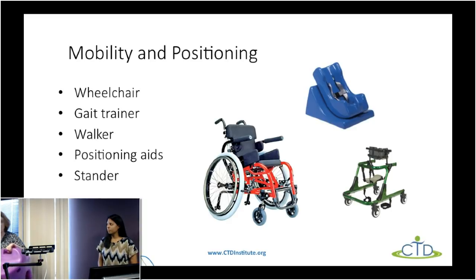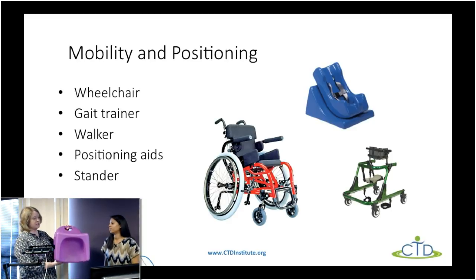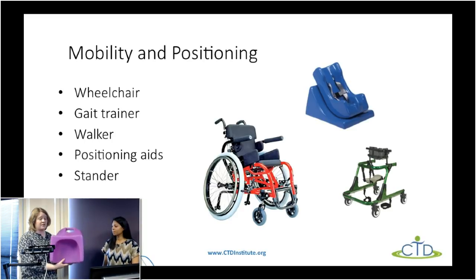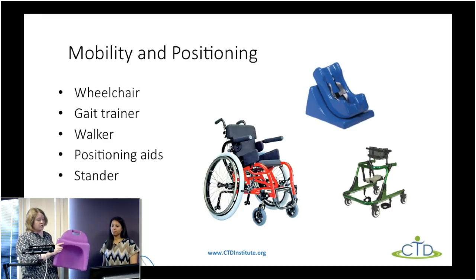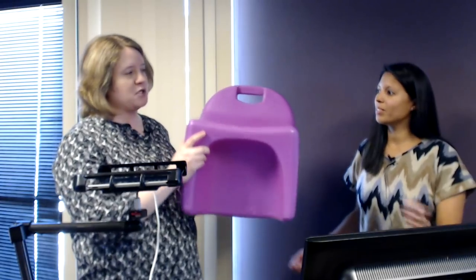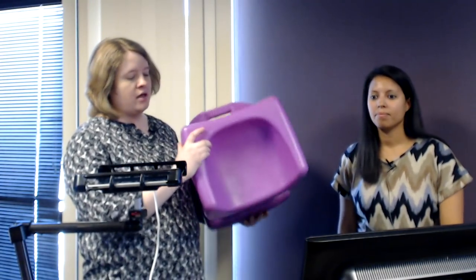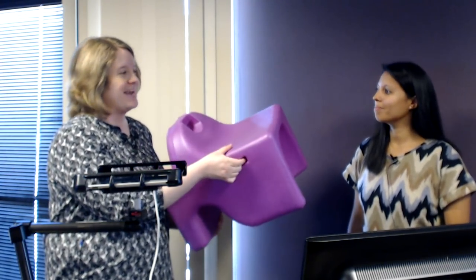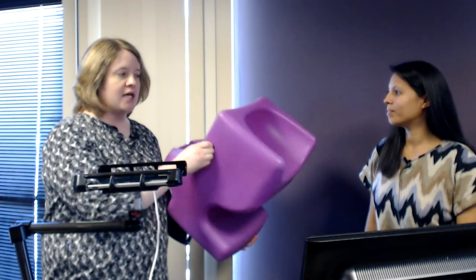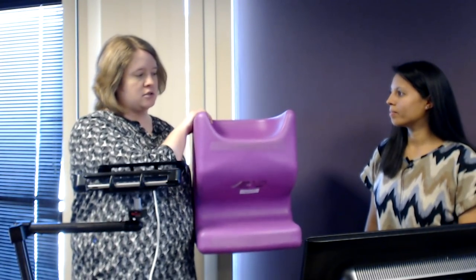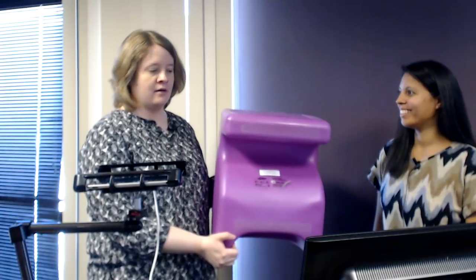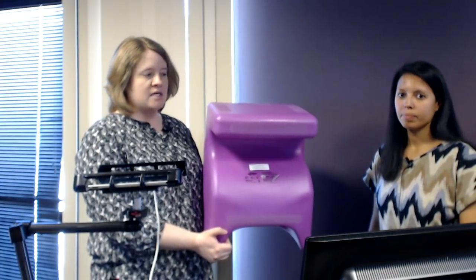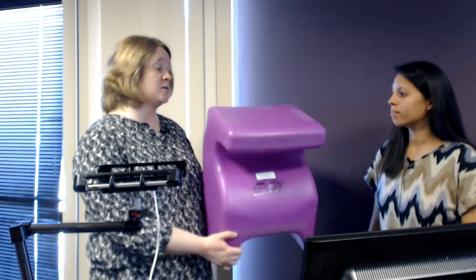We have a cool chair in our library called the Vidget Chair. It comes in different sizes — this is the toddler size but it goes all the way up to adult size. When you sit in it you can wiggle back and forth; the chair rocks from side to side. Within the handholds there are some bumps for sensory input, and it's modular — so I can also turn it into a stool or a table. It can be a nice way to get positioning support in the classroom or at home.